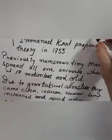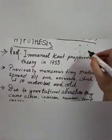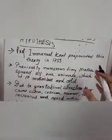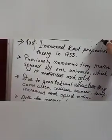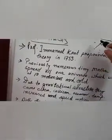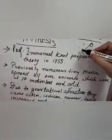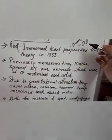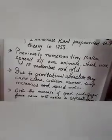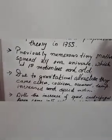Previously, numbers of different tiny particulate matters were spread throughout the universe, but with time, due to the gravitational attraction, they came closer to each other. For example, this is a particulate matter and this is another particulate matter. When they come closer to each other, collision occurs, and as a result of that collision, the temperature between these two increased, and along with the temperature, the speed of motion also increased.